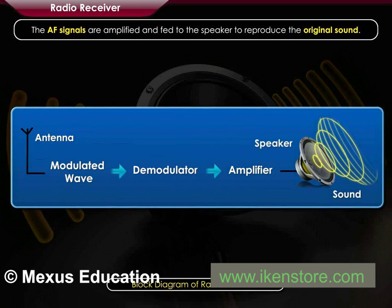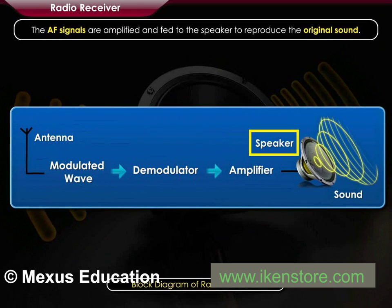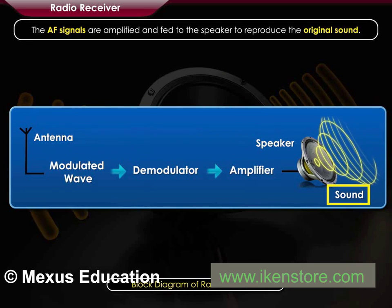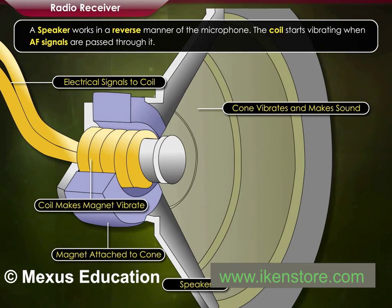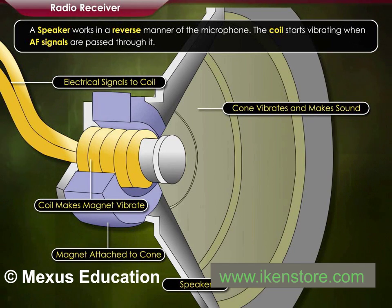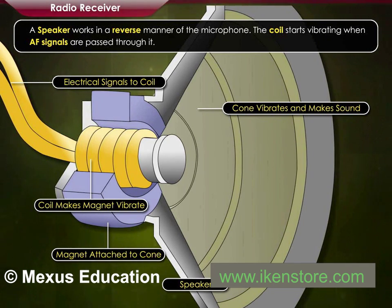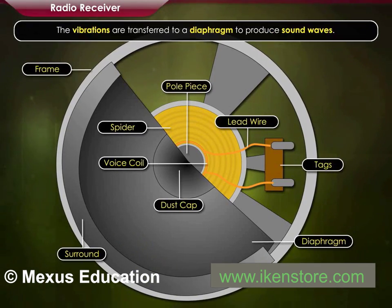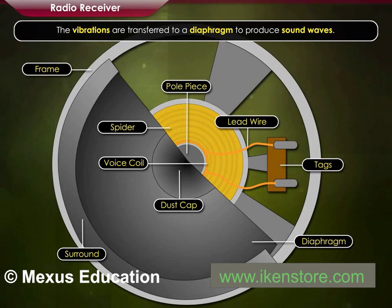The AF signals are amplified and fed to the speaker to reproduce the original sound. A speaker works in a reverse manner to the microphone. The coil starts vibrating when AF signals are passed through it. The vibrations are transferred to a diaphragm to produce sound waves.